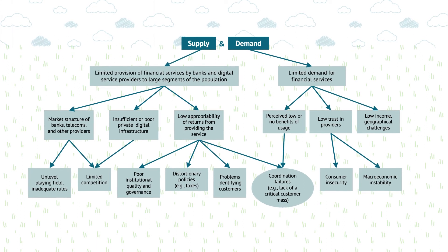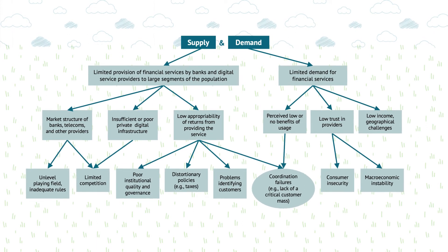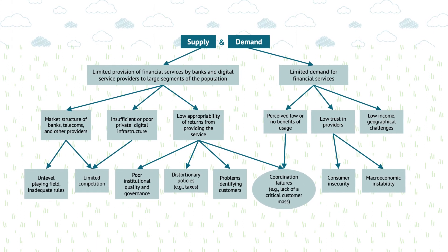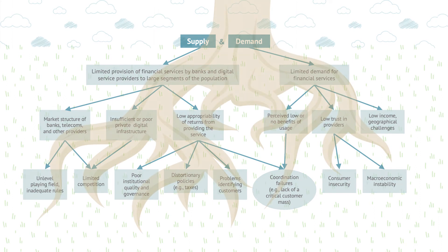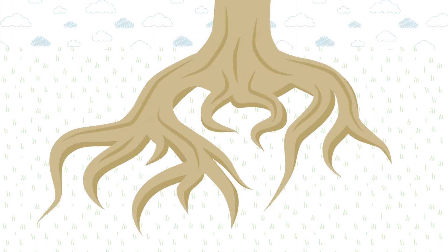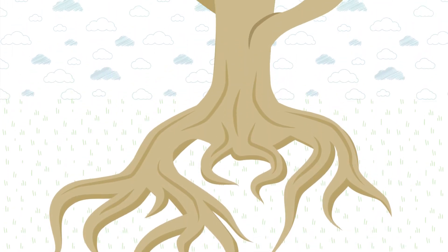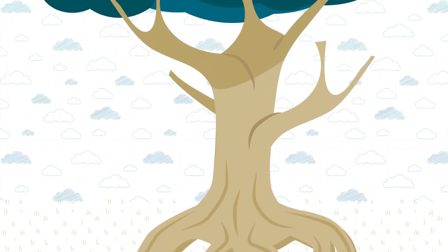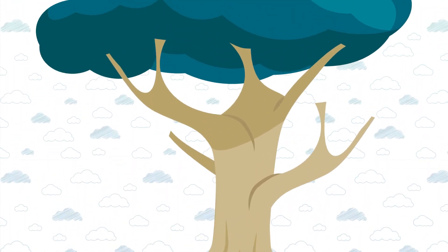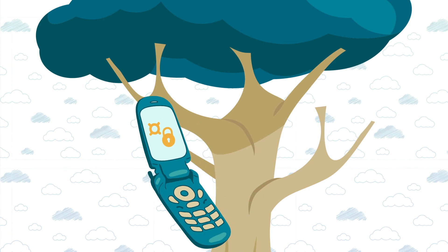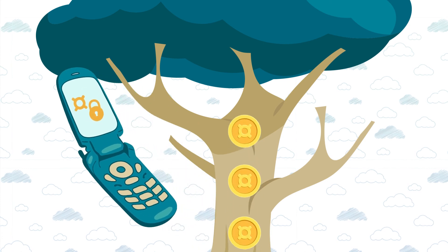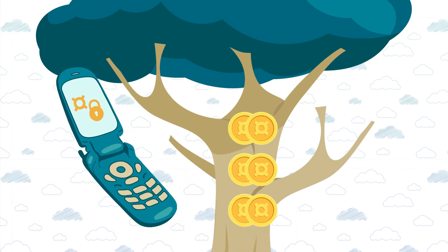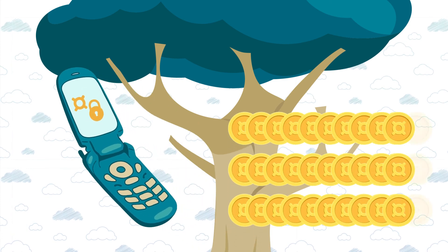By using these and other principles of the decision tree, policymakers can identify binding constraints and prioritize and enact the changes that will boost financial inclusion and benefit their countries.